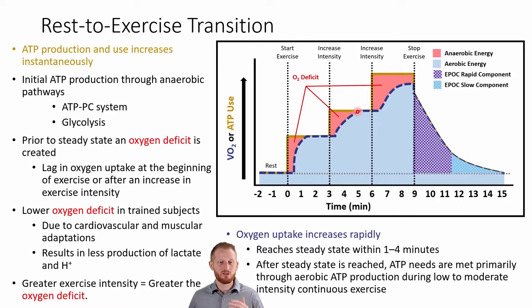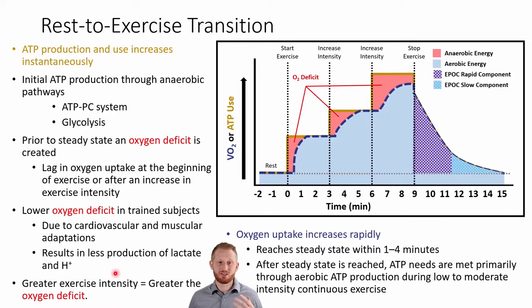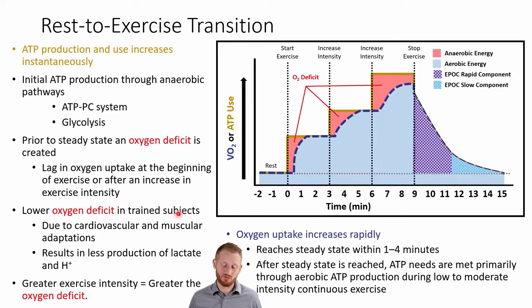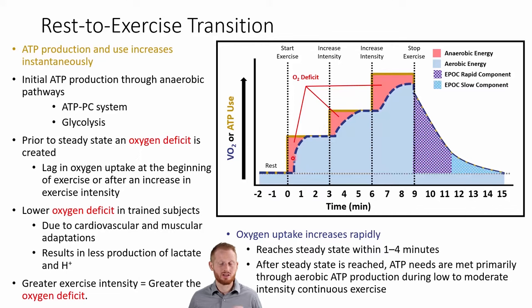This happens every time we increase exercise intensity — for a period of time until aerobic metabolism ramps up and catches up. During this lag time, this O2 deficit, we're using glycolysis and phosphocreatine — burning through those resources. We're also potentially producing extra lactate and extra hydrogen ions, which are acid, because we're not using aerobic metabolism. We want to try to minimize our oxygen deficit. Good news: trained individuals do have lower oxygen deficit levels than untrained individuals.